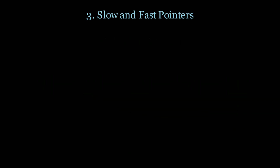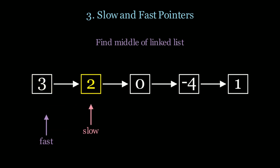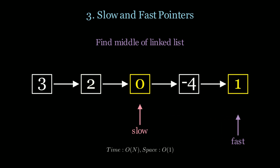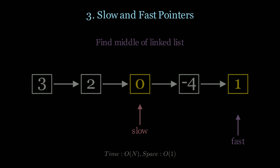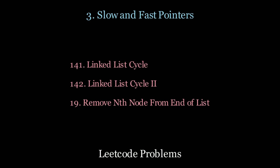To find the middle of a linked list, we initialize slow and fast again, move slow once and fast twice each step. When fast reaches the end of the list, slow is at the middle. The time complexity is O(n), space is constant, and we do this in one pass. For more practice, look at the following LeetCode questions.